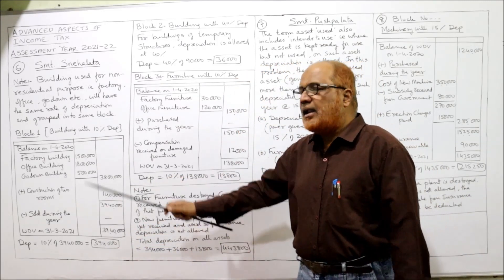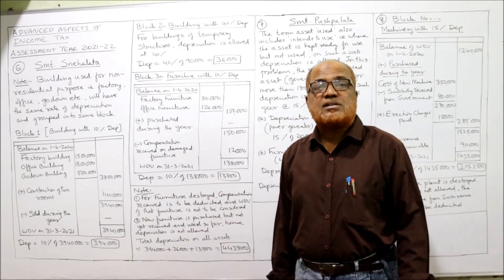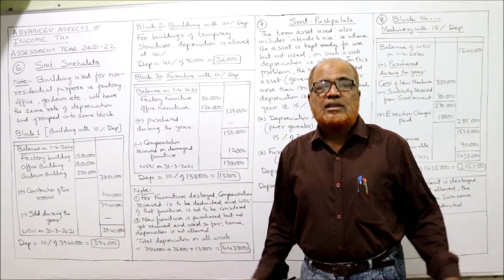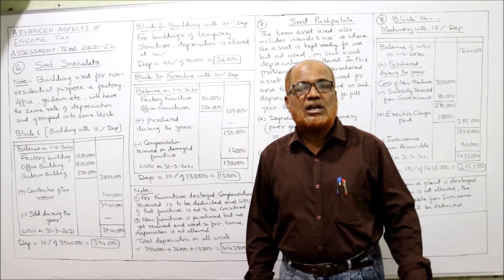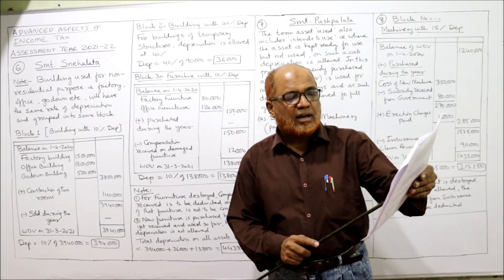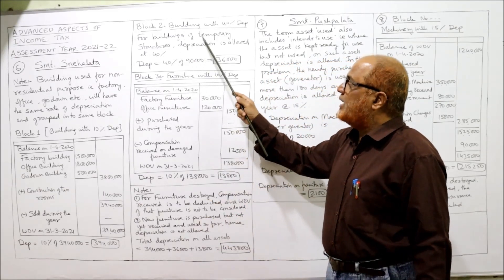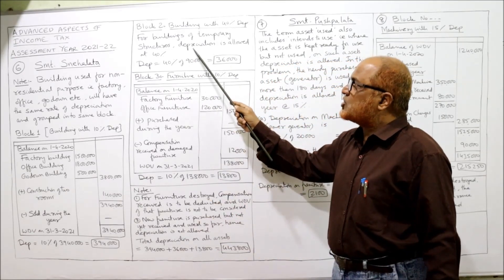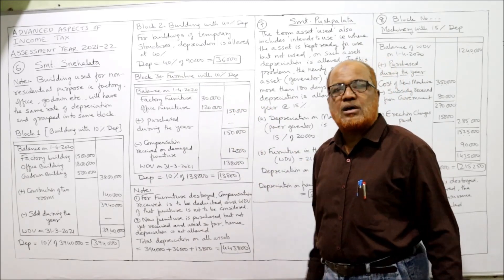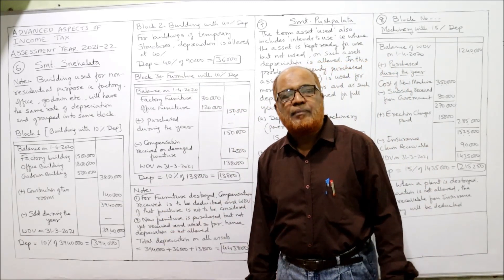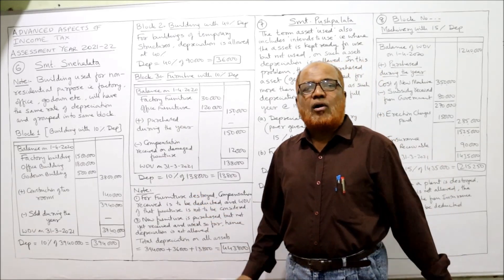Second block: building with 40% rate, applicable for temporary structures. In our problem, temporary sheds costing Rs. 90,000 were erected. Depreciation at 40% of Rs. 90,000 = Rs. 36,000. Two blocks completed.